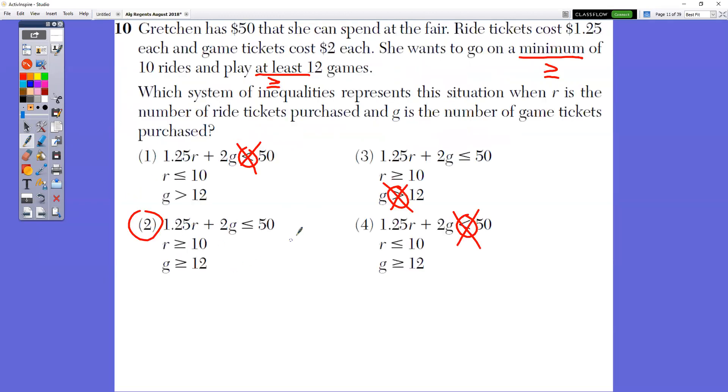In question number 10, Gretchen has $50 that she can spend at the fair. Ride tickets cost $1.25 each. Game tickets cost $2 each. She wants to go on a minimum of 10 rides. So a minimum means that is the lowest number. So it could be equal to that or greater than that.